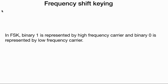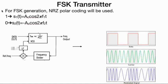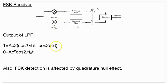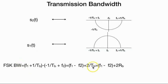In Frequency Shift Keying (FSK), binary 1 is represented by high frequency and binary 0 by low frequency. Two different frequencies AC·cos(2πF1t) and AC·cos(2πF2t) are used to represent data. The bandwidth will be |F1 − F2| + 2Rb. The output filter will be AC²/2.